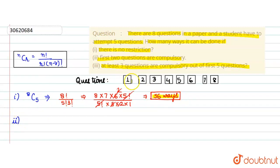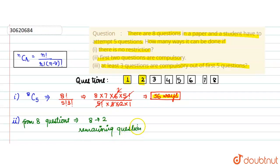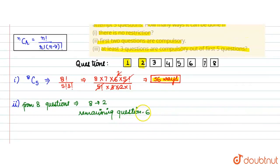The first 2 questions are compulsory. These questions must be attempted. So 2 questions out of 8 are compulsory, which means 6 questions remain. From these 6 remaining questions, since 2 are already done out of the required 5, the student has to choose any 3 more.